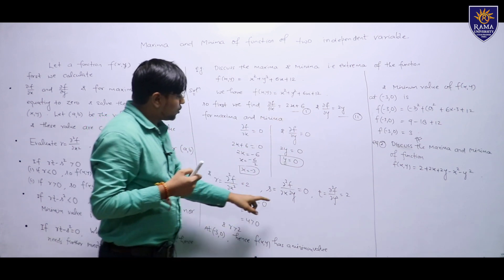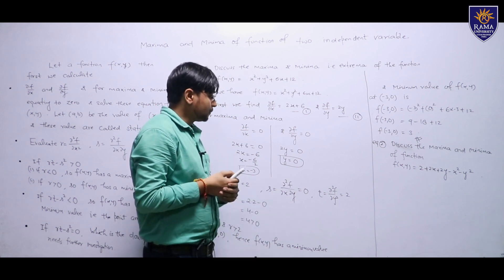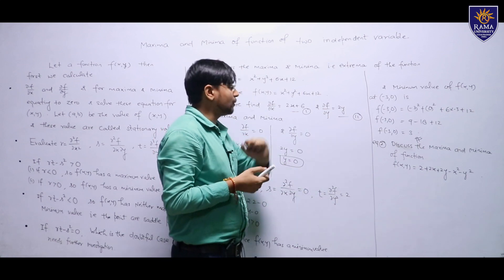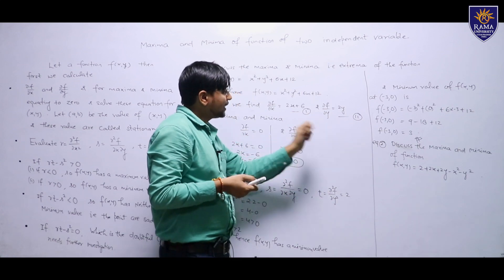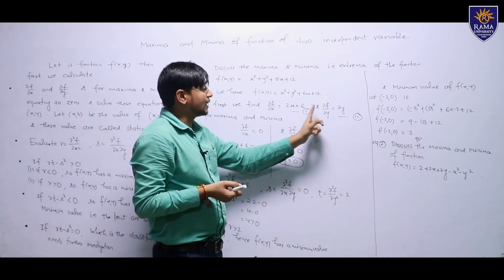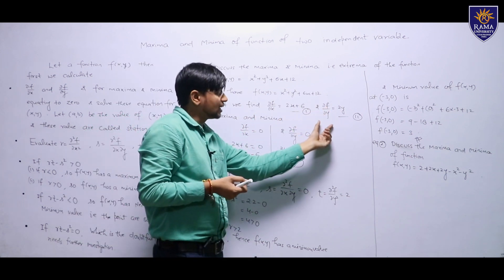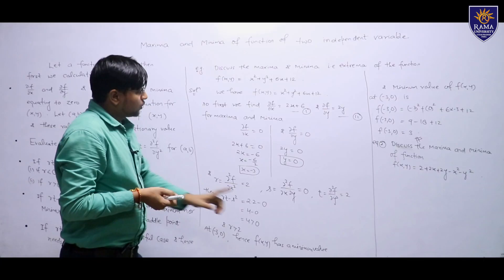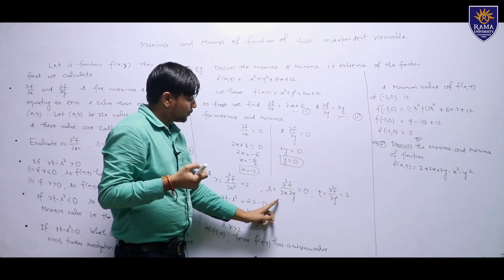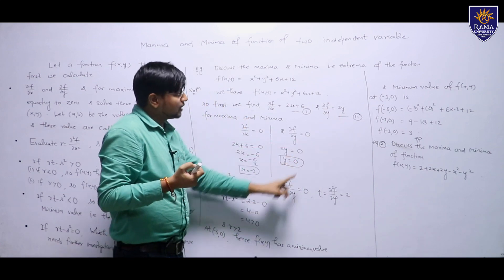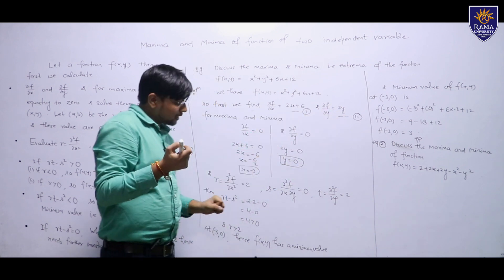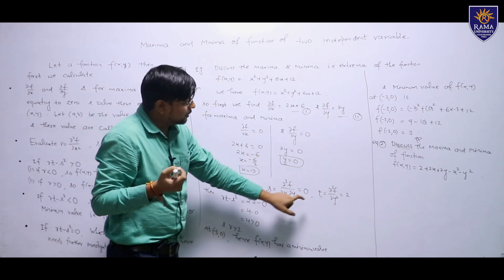S = ∂²f/∂x∂y. From equation 2, ∂f/∂y = 2y. Now partially differentiating with respect to x: since 2y is treated as a constant with respect to x, this differentiation equals 0. Therefore S = 0.